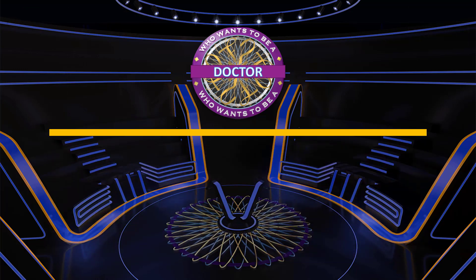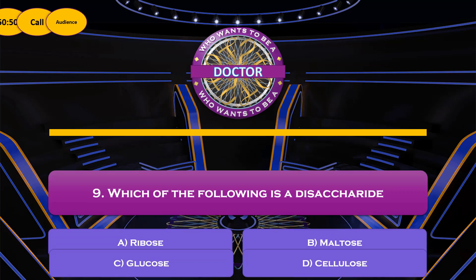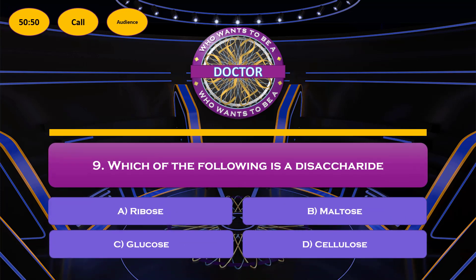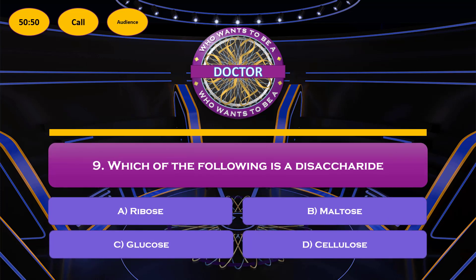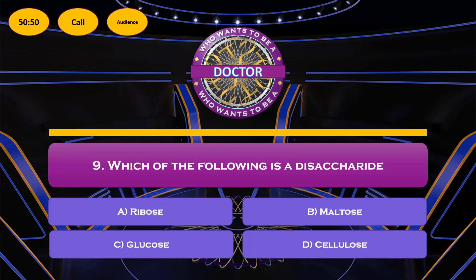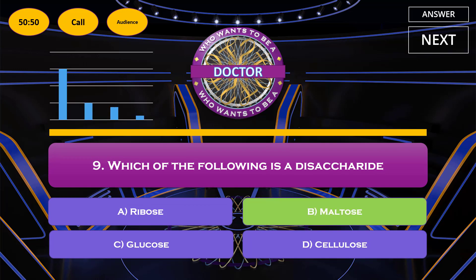Question number 9: which of the following is a disaccharide — ribose, maltose, glucose, or cellulose? The correct answer is option B, maltose.